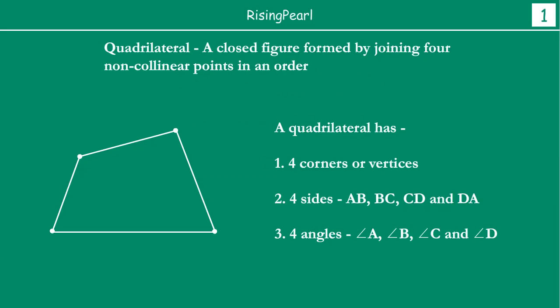Now Dostoy, we start with doing a quick recap. Aapne dekha Dostoy, last episode me we talked about what is a quadrilateral. A quadrilateral Dostoy is a closed figure formed by joining 4 non-collinear points in order.